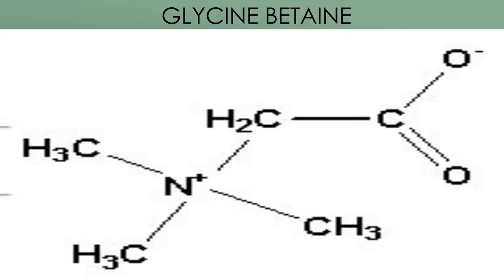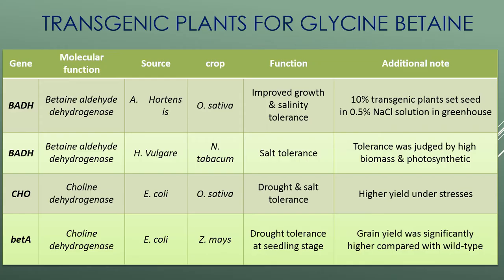Glycine betaine accumulates in chloroplasts and plastids and increases the tolerance of plants to various abiotic stresses like drought, salinity, and freezing. Its physiological role in alleviating osmotic stress includes protecting proteins and enzyme activities under water deficit, stabilizing membranes during freezing, and helping stabilize protein tertiary structure. Accumulation of glycine betaine is limited due to choline supply. Transgenic potato plants expressing the bacterial choline oxidase gene leads to high levels of glycine betaine under drought stress.